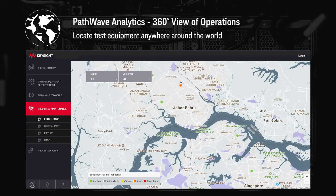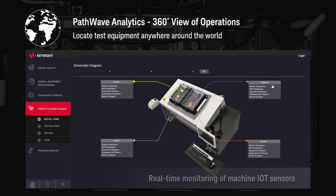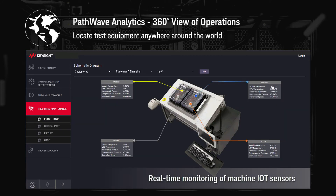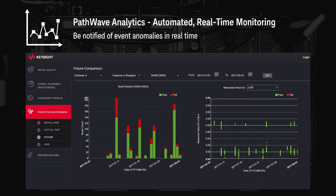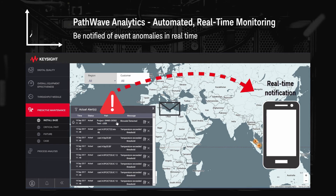Second, it offers an advanced global 360 visual interface to help you manage assets more efficiently and effectively. You can review each test's performance and status in real time, no matter where it is located globally. Third, in the event of anomalies, its built-in automated monitoring algorithms can trigger actionable alerts in real time via email, SMS, or mobile messaging applications.